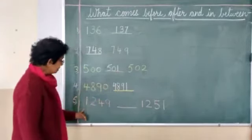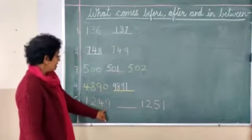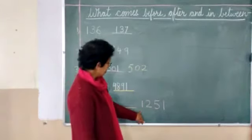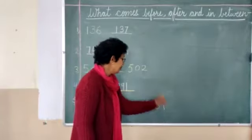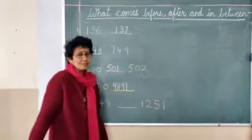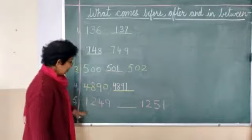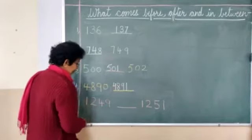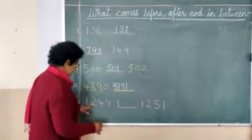Now the last number: 1249 and 1251. In between which number will come? Now again we will count forward. First number, what we will write? The same number. Second number, same. There is no change.